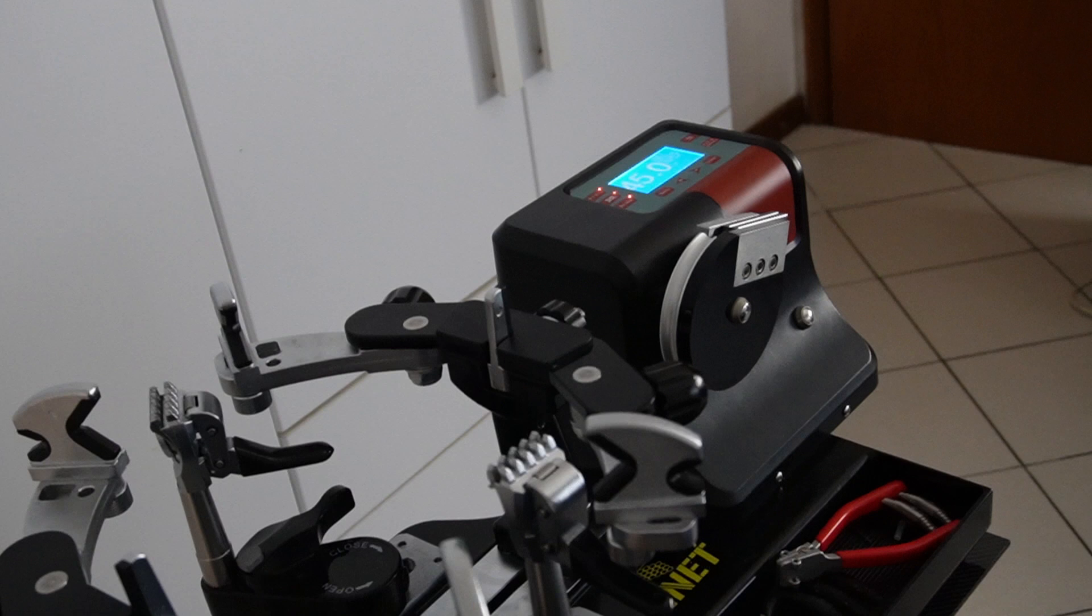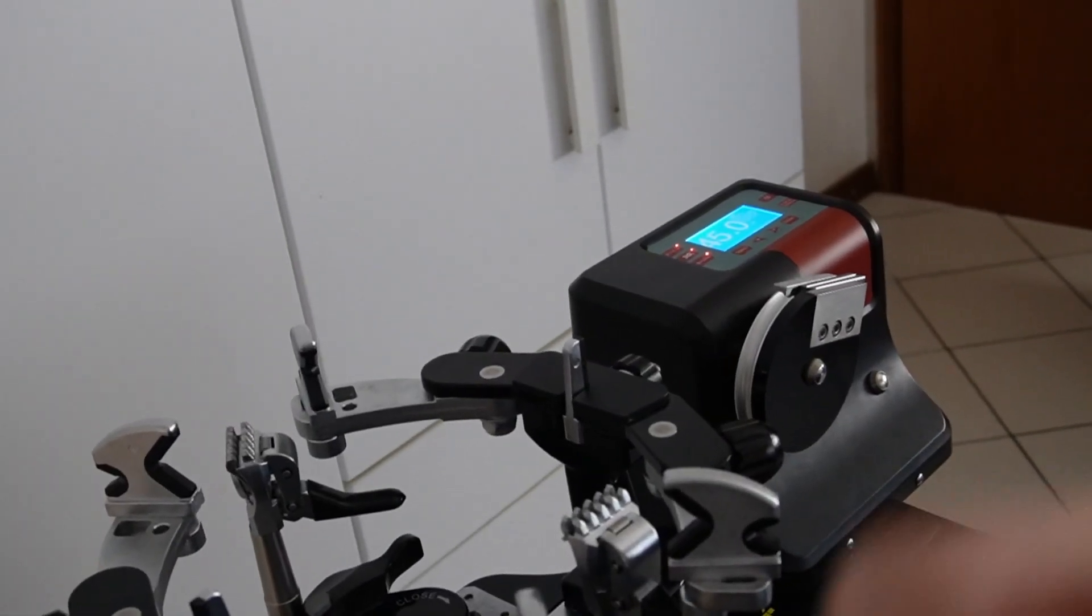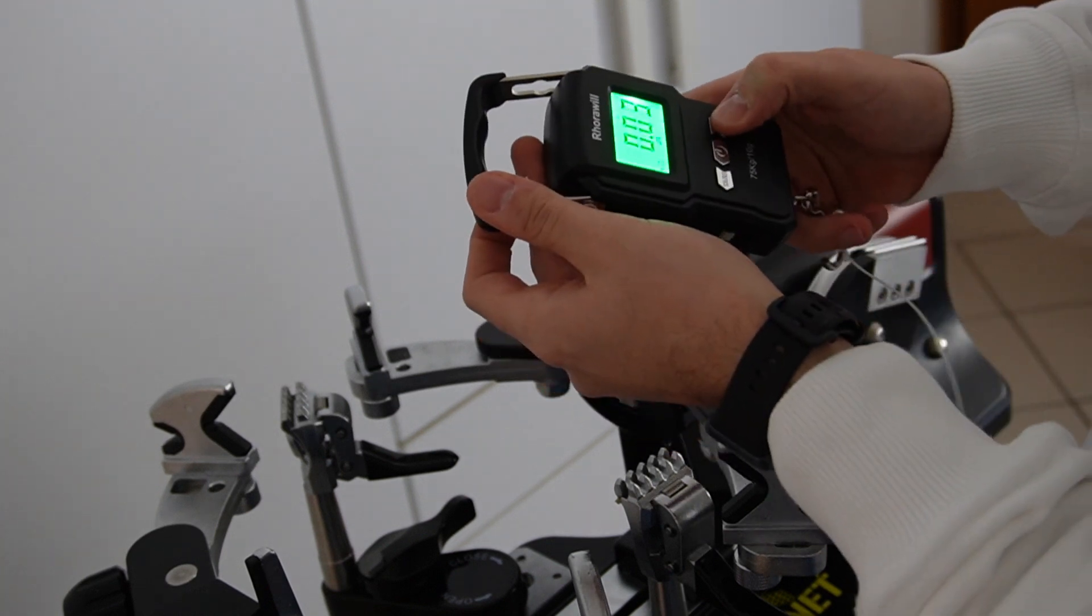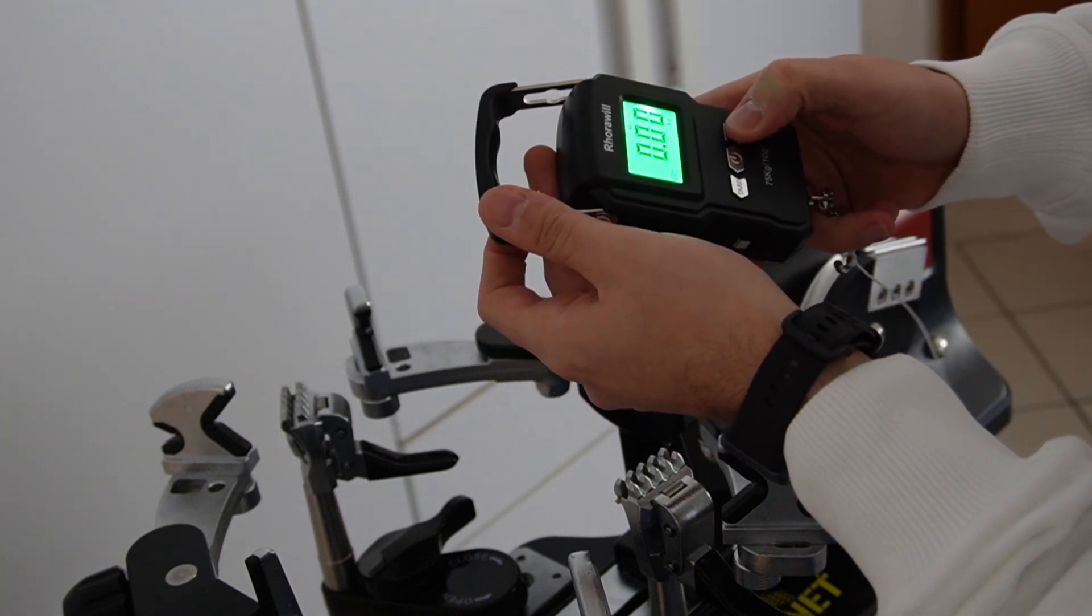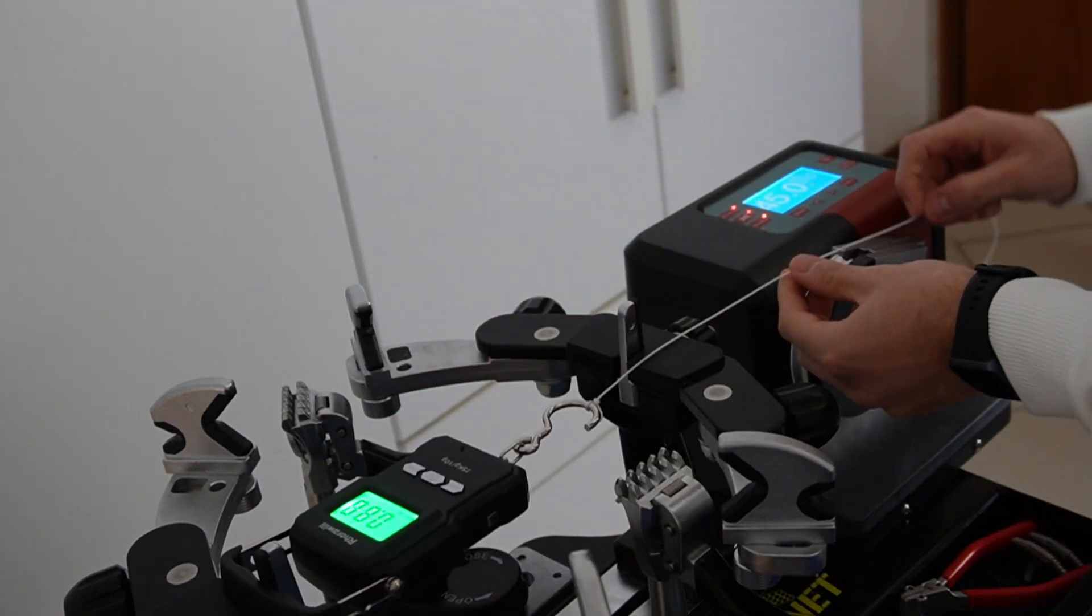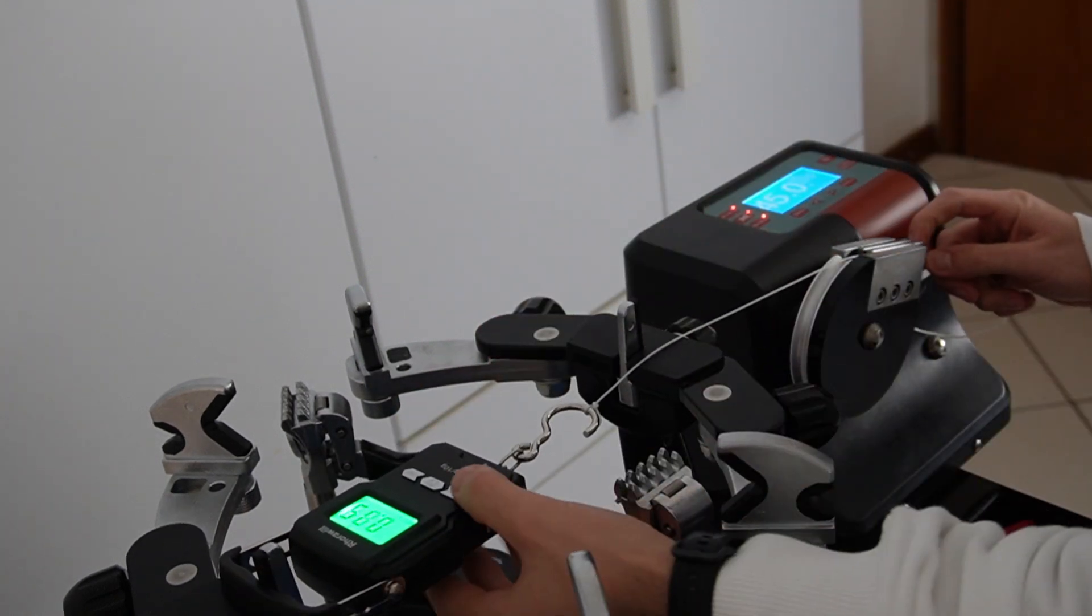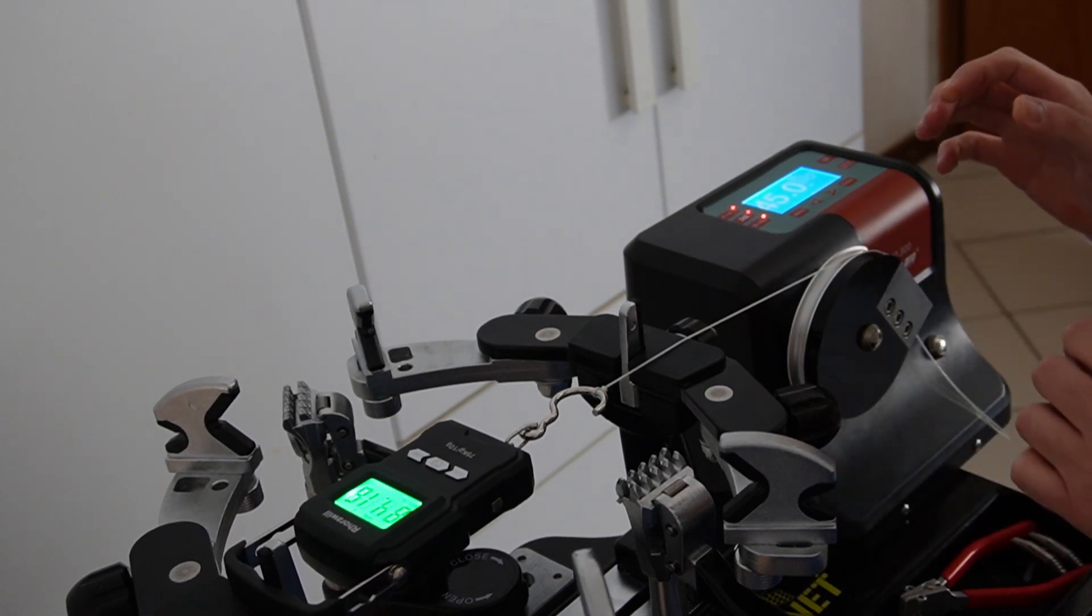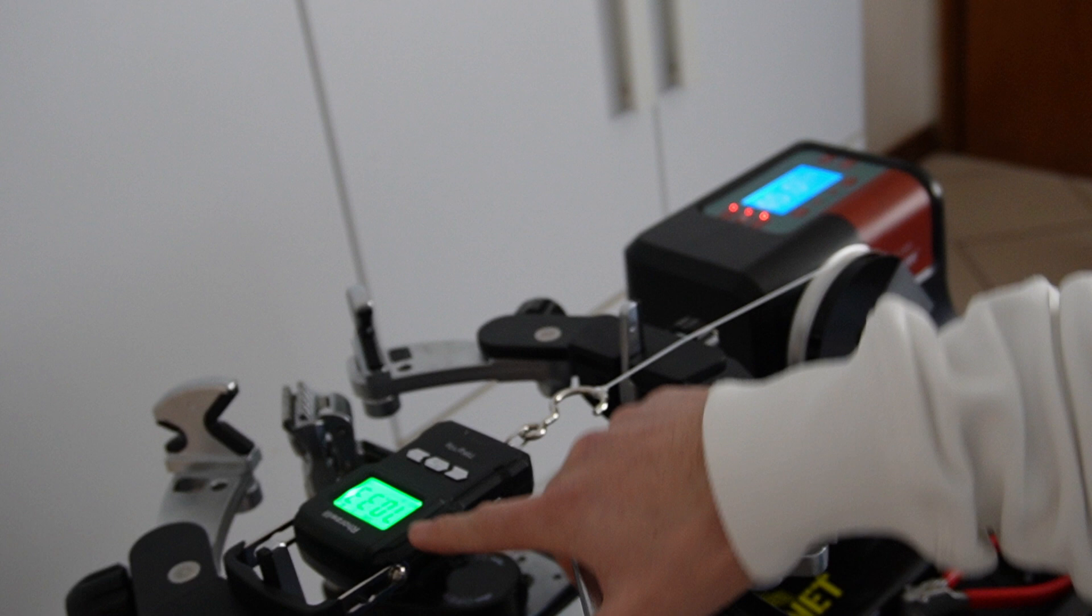To check it we just lock the dynamometer in the stringing machine. There and pull. Now a value appears here. 70.